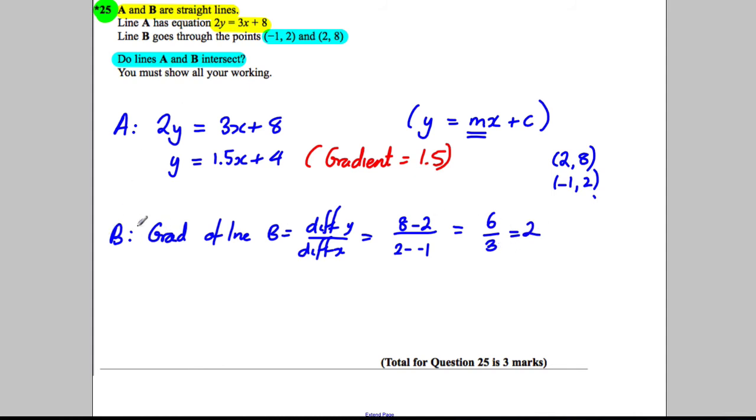Now, they have two different gradients. Let's think what that means. If we've got two lines with different gradients, they must meet at some point on a 2D surface. The only way two lines wouldn't meet is if they were parallel to each other with the same gradient. So the question is, do they intersect?